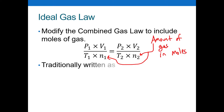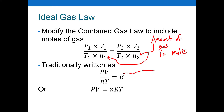Traditionally we write the ideal gas law as PV over nT equals R, and we change this further — usually I'll refer to the ideal gas law as PV equals nRT. Remember in all the other gas laws we discussed, we had a proportionality constant — well, it turns out that's what this R is.